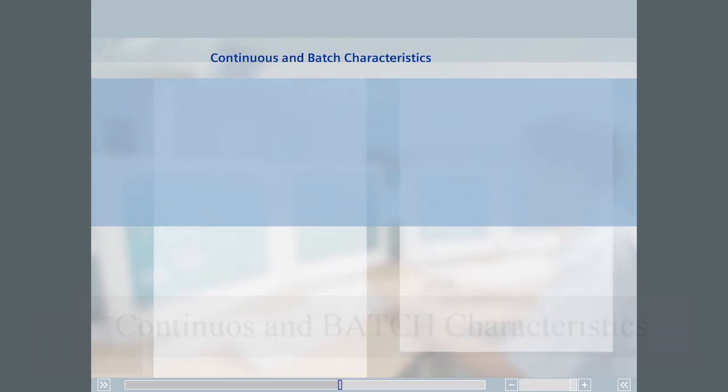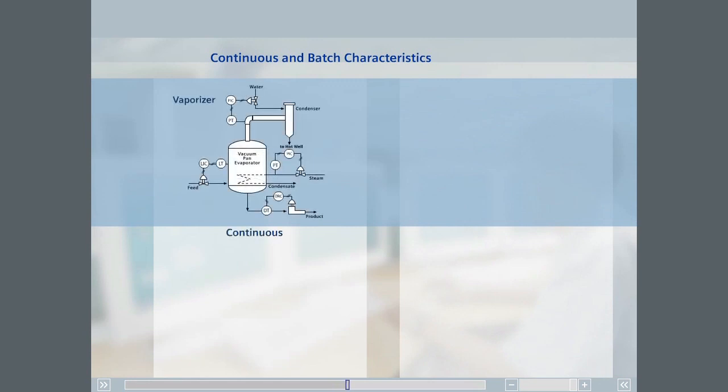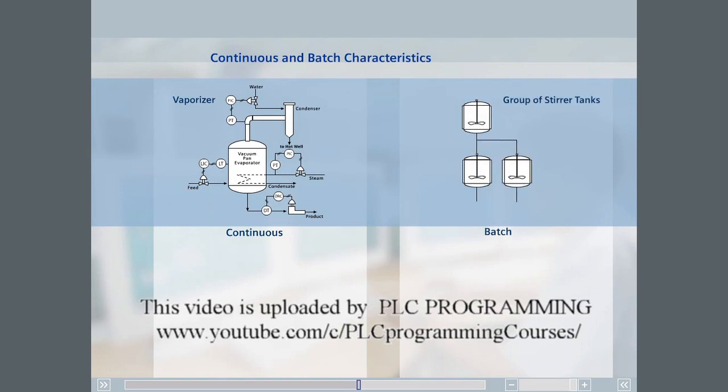Some of the feature differences can be illustrated using an example. A vaporizer is an example of a continuous process. A group of stir tanks is an example of a batch process.